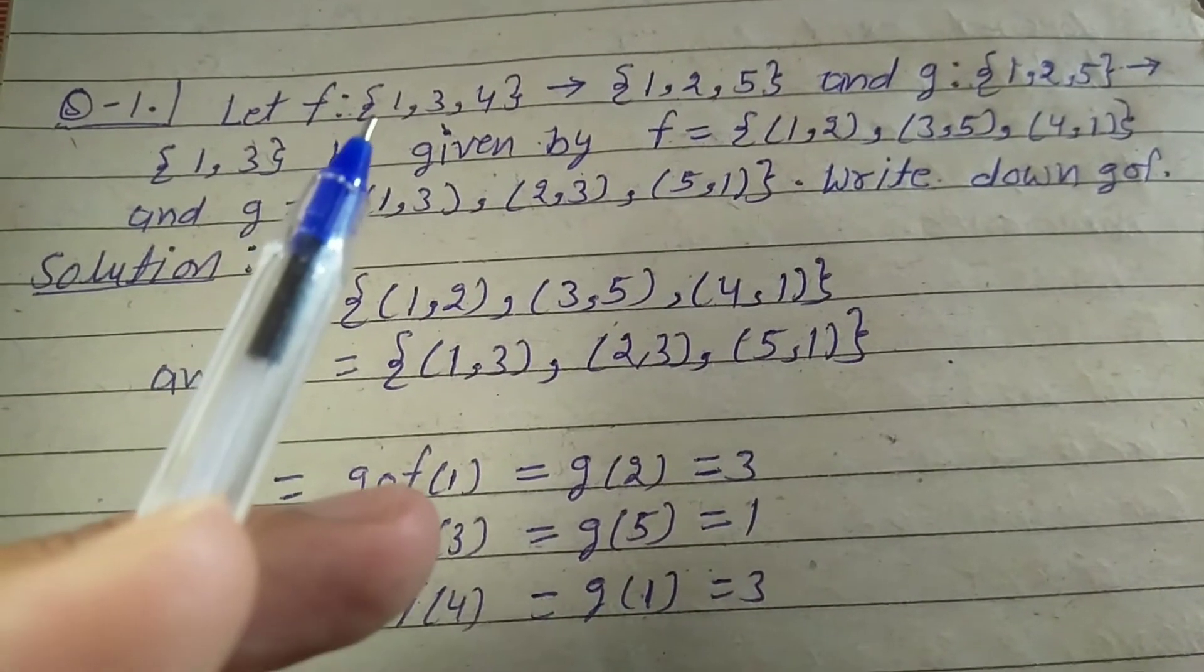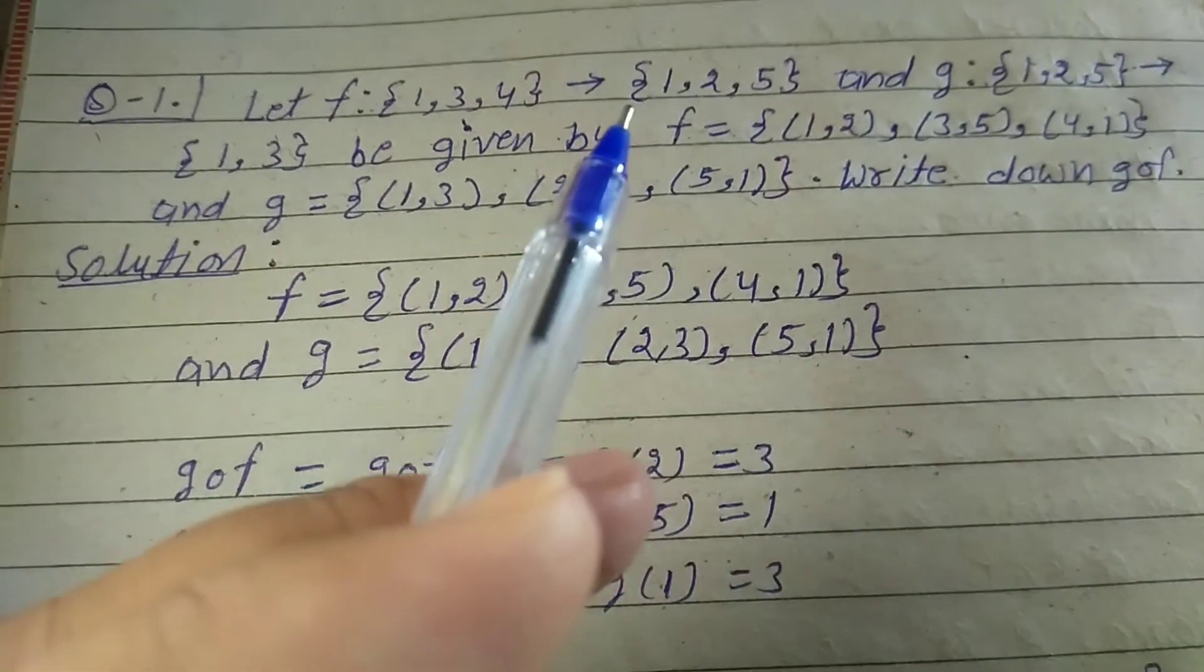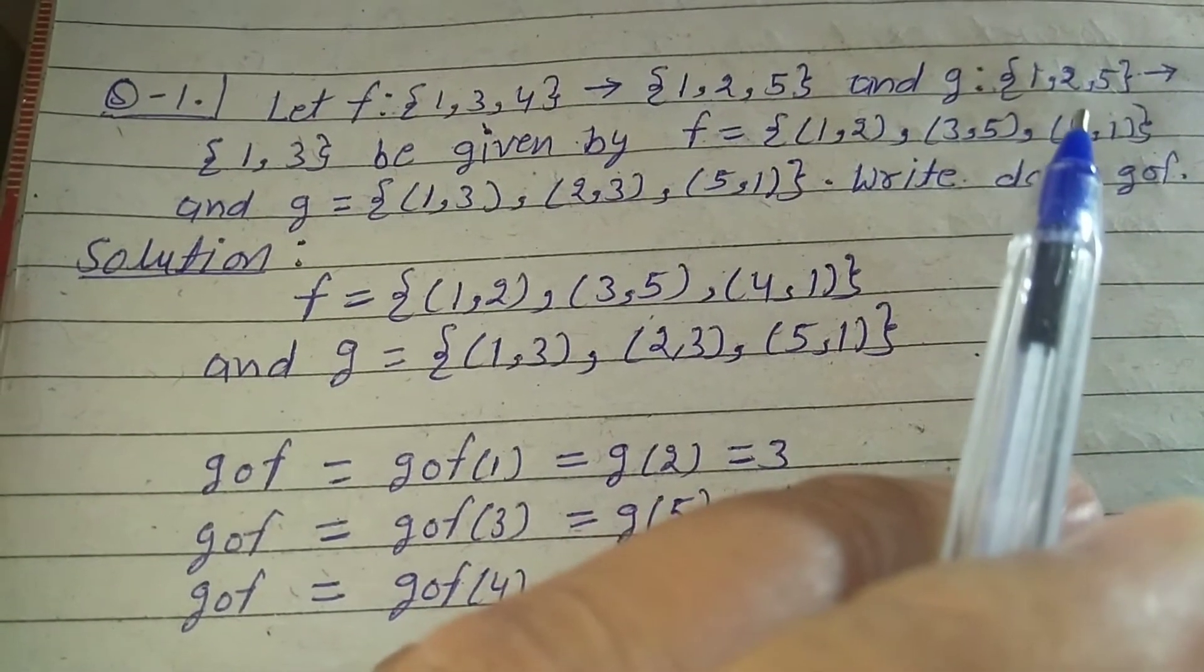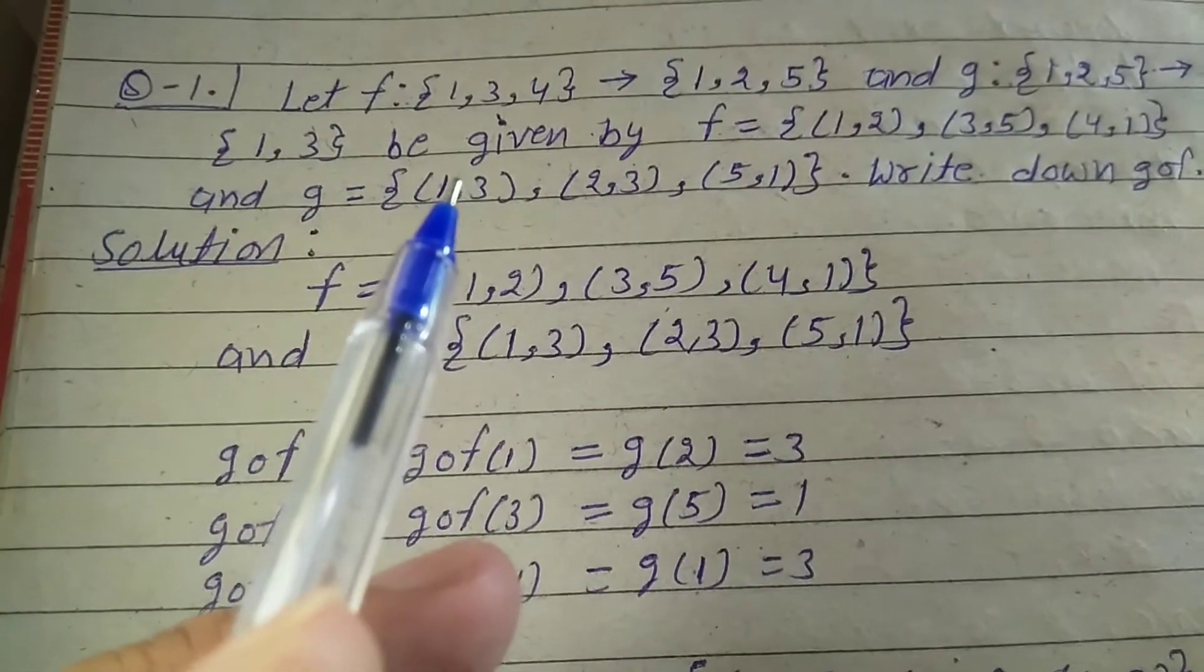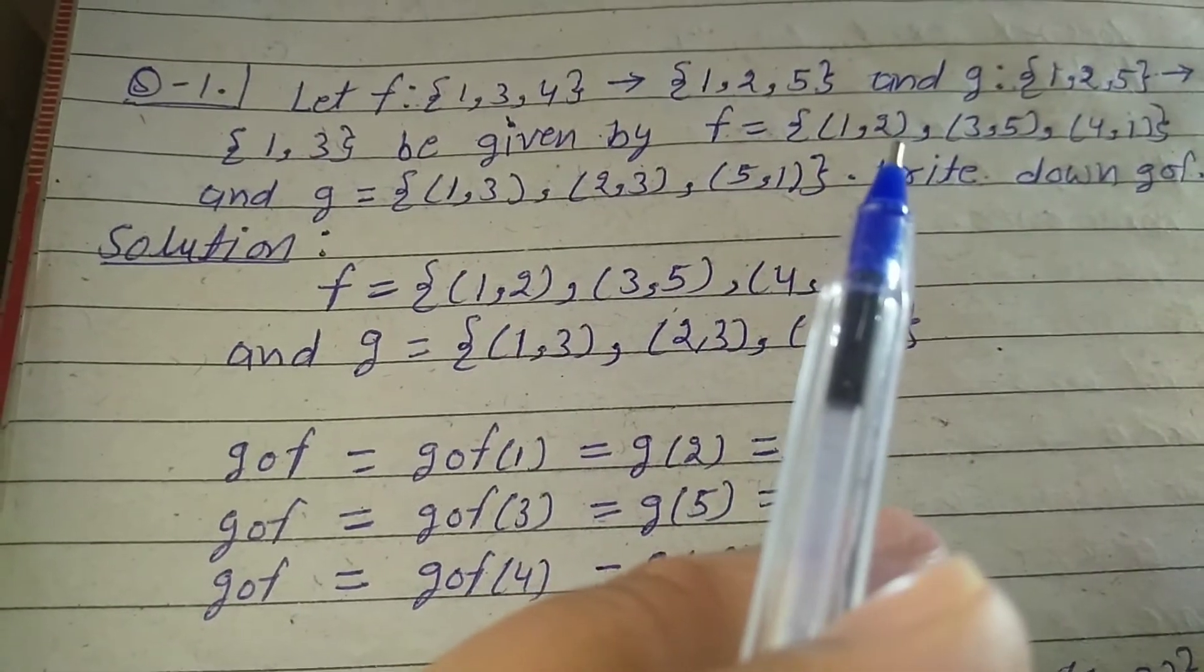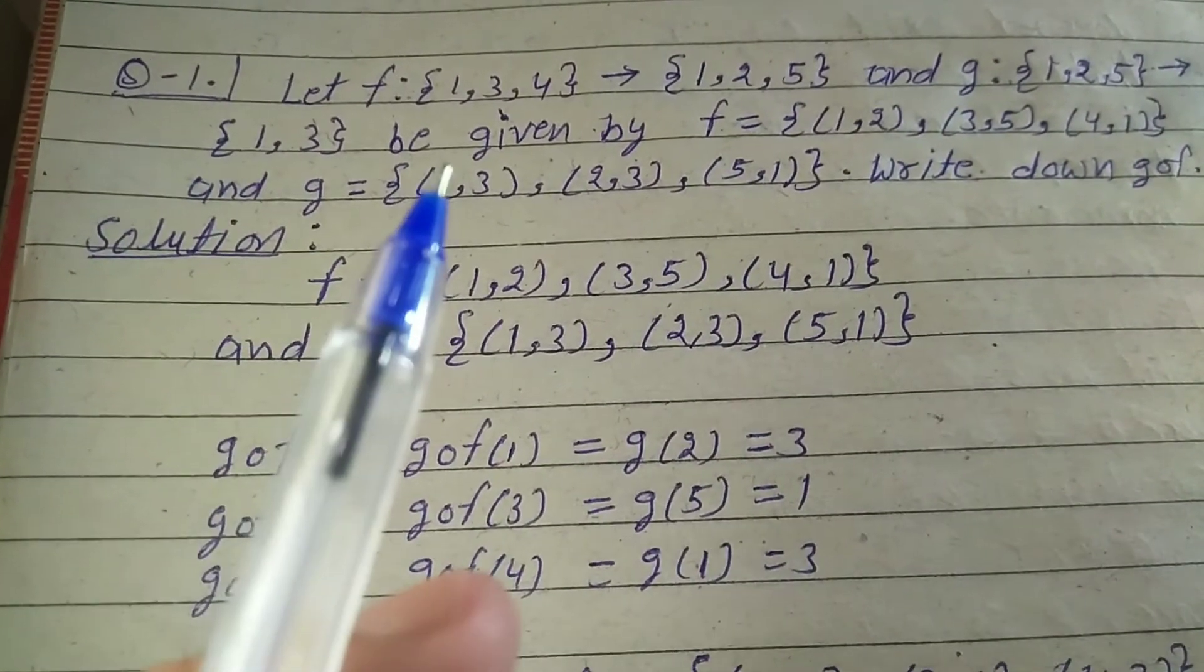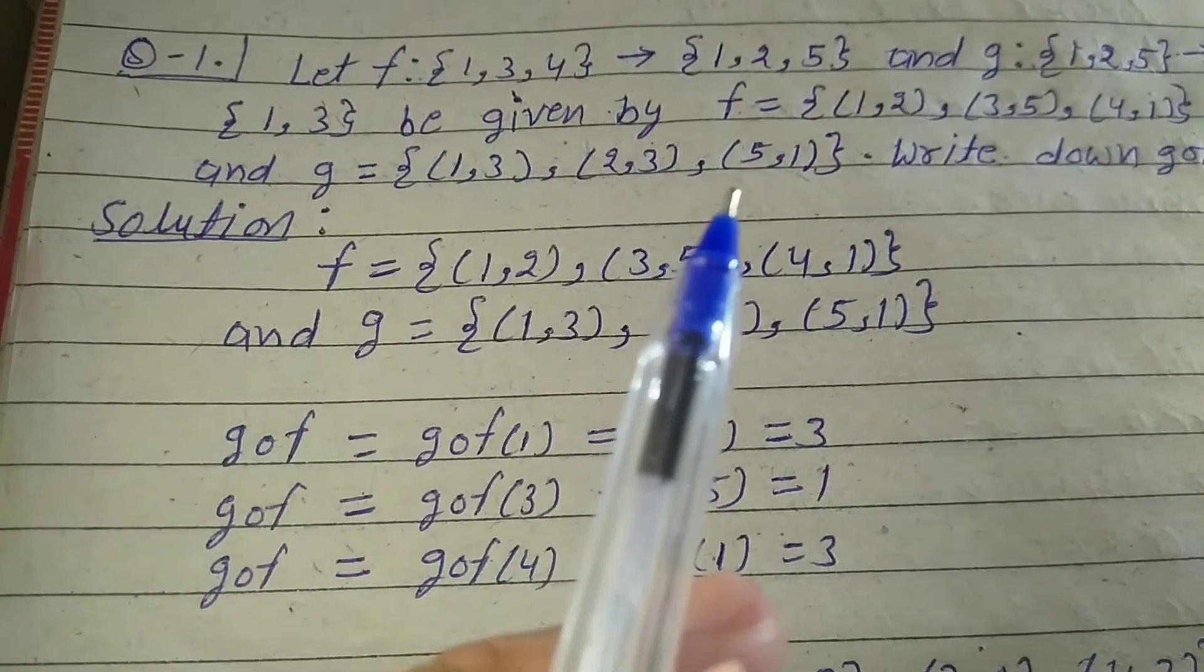Let F: {1,3,4} → {1,2,5} and G: {1,3,5} → {1,3} be given by F = {(1,2), (3,5), (4,1)} and G = {(1,3), (2,3), (5,1)}. Write down GoF.